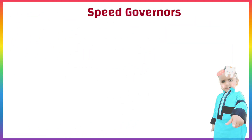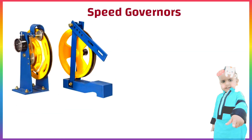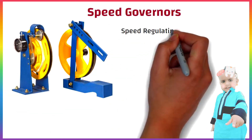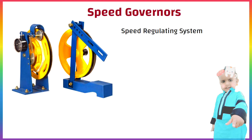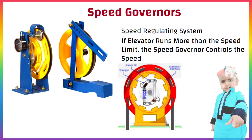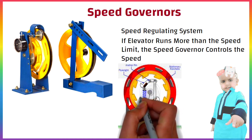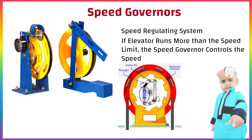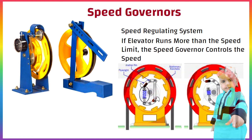Most elevators have an entirely separate speed regulating system called a governor, which is a flywheel with mechanical arms built inside it. Normally the arms are held inside the flywheel by springs, but if the lift moves too fast, they fly outward, pushing a lever mechanism that trips one or more braking systems.